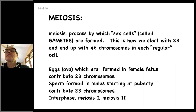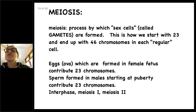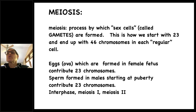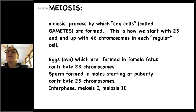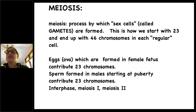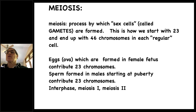That was mitosis. There's another process — how we end up with new human beings. Meiosis is the process by which sex cells are formed; they're called gametes. This is how we start with 23 and end up with 46 chromosomes in each regular cell. The egg is formed in a female fetus and contributes 23 chromosomes. The sperm, formed in males starting at puberty, contributes 23 chromosomes. The process has an added step: interphase, meiosis one, and meiosis two.